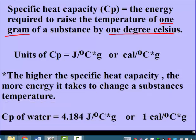The units for specific heat are joules per gram degree Celsius or calories per gram degree Celsius. The higher the specific heat capacity, the more energy it takes to change the substance's temperature. Water has a relatively high specific heat of 4.184 joules per gram degree Celsius. If we convert that to calories, it's 1 calorie per gram degree Celsius. Make sure that you have your specific heat of water memorized.